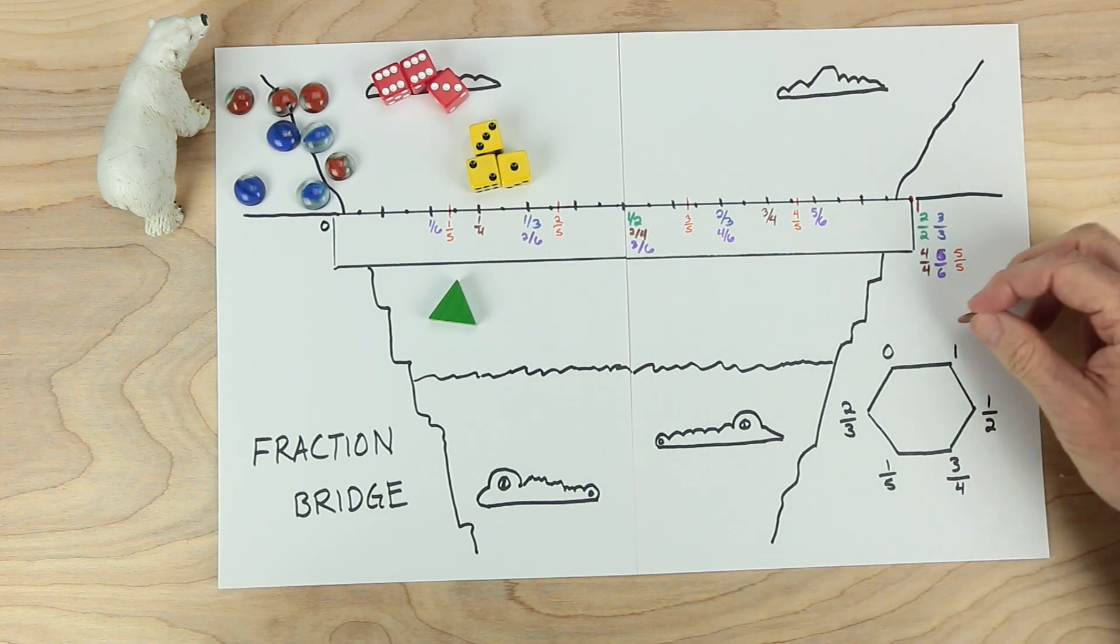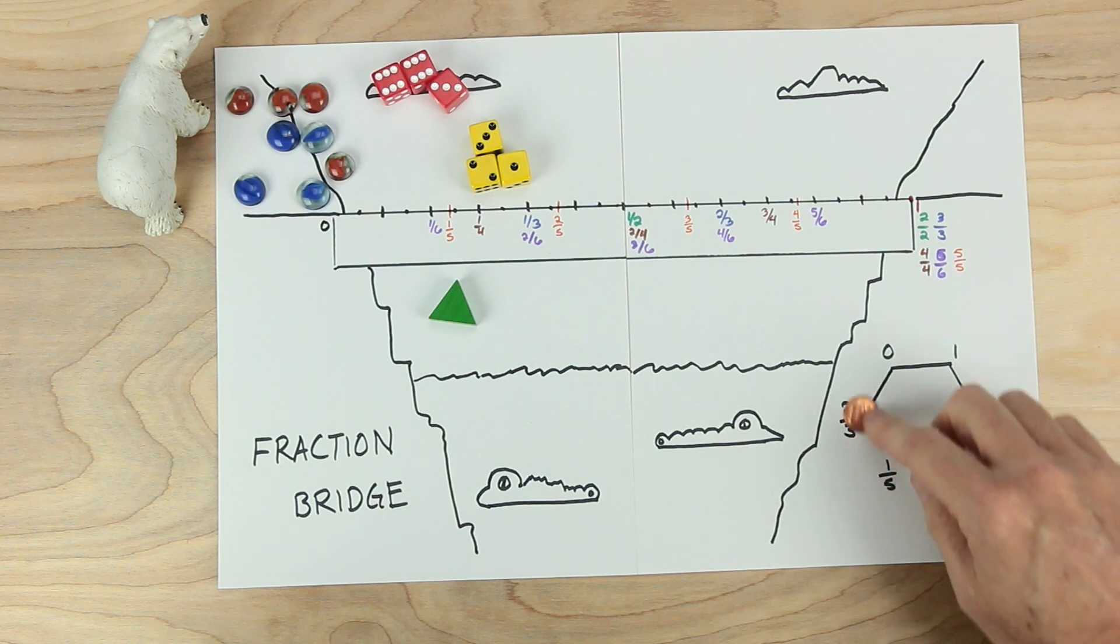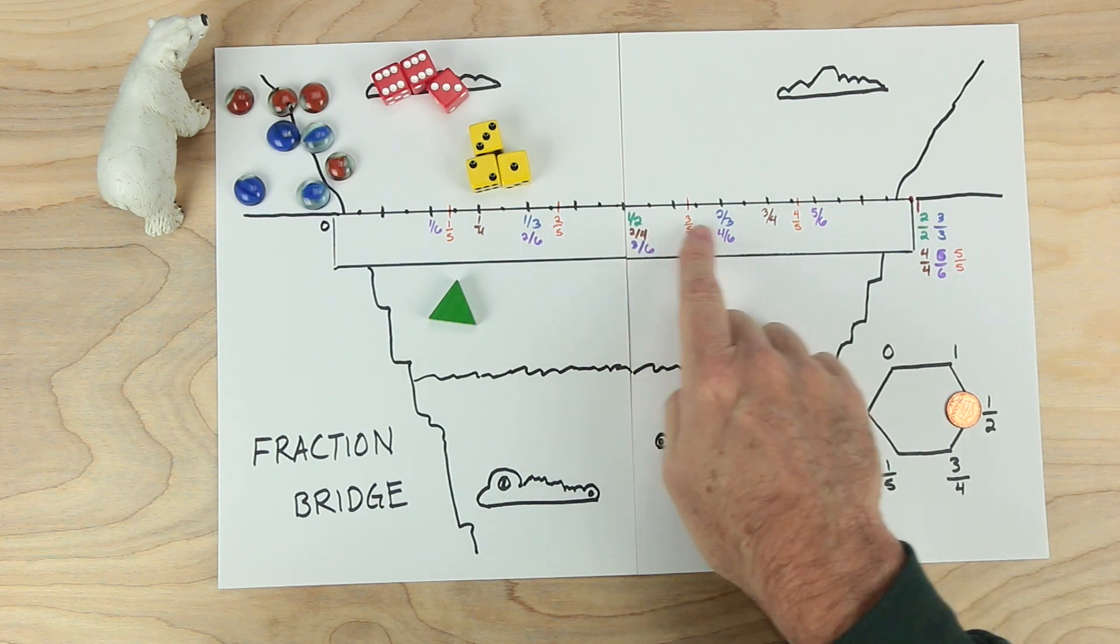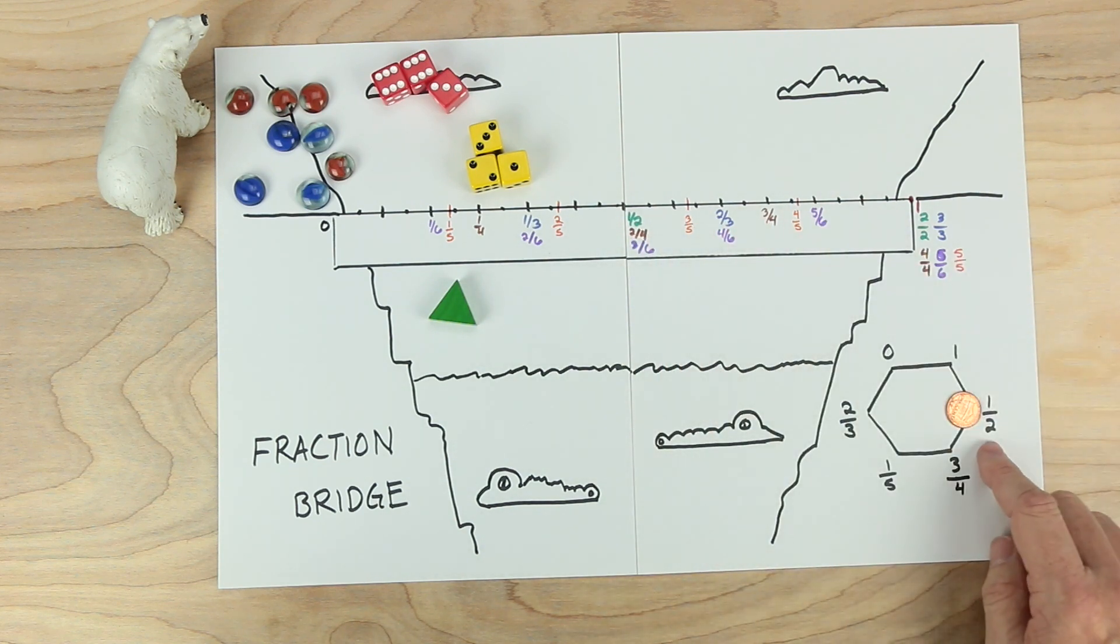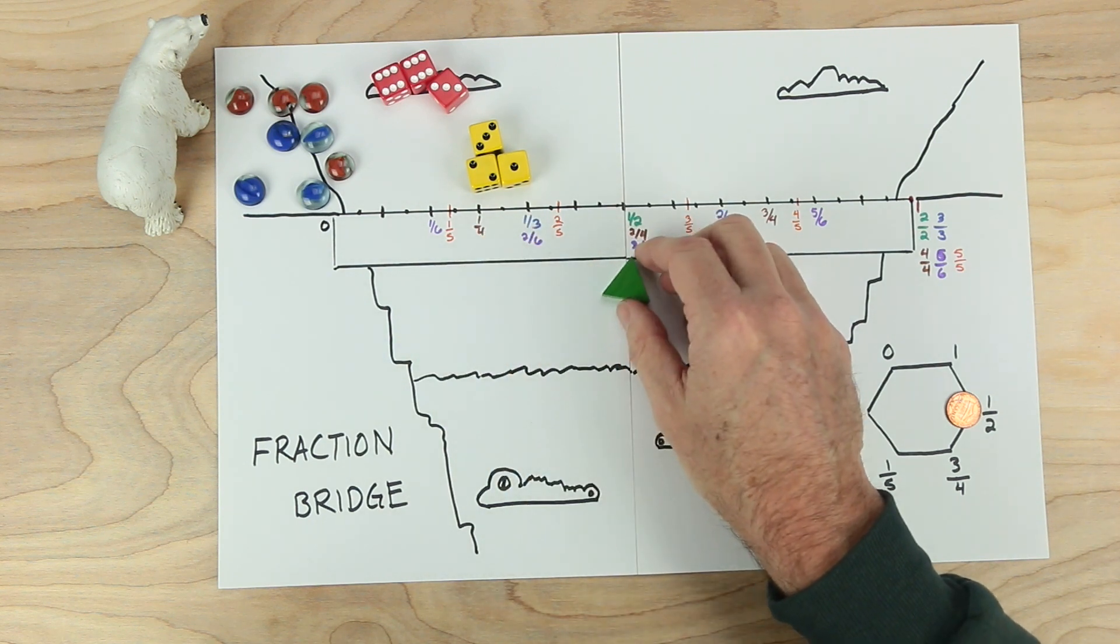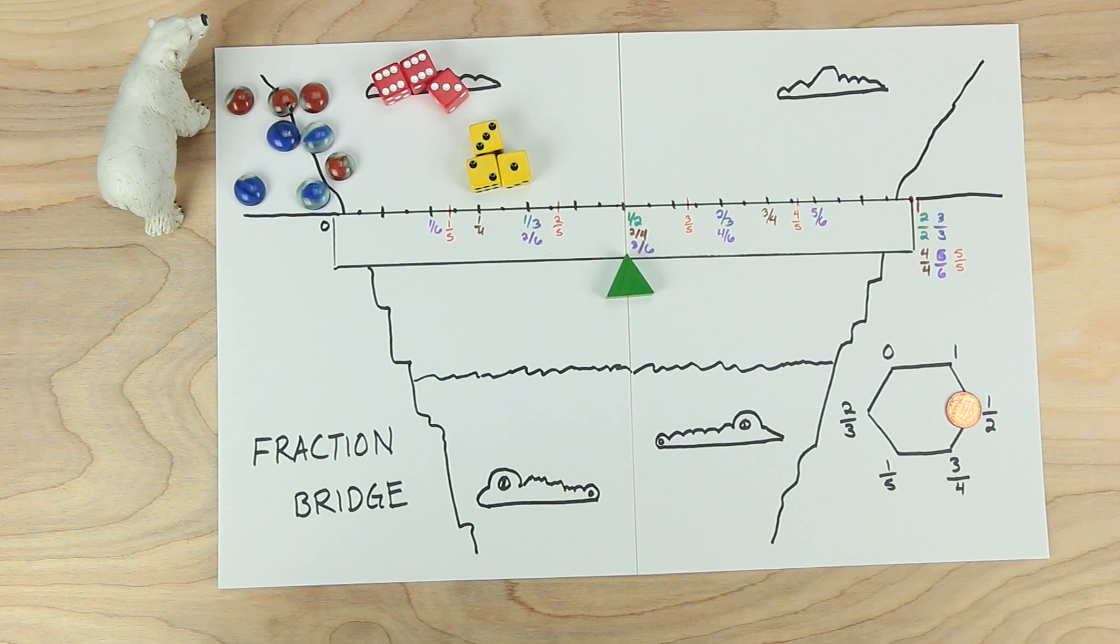So to play the game, we need to put a marker over here on this wheel. You can start anywhere you want. I'm going to start at one half. Each turn, you're going to move along this wheel to a different number. And this will determine which fraction matters along the bridge. Right now, it's one half. So I'm going to move my marker to one half. Both players are thinking about one half as what's important.